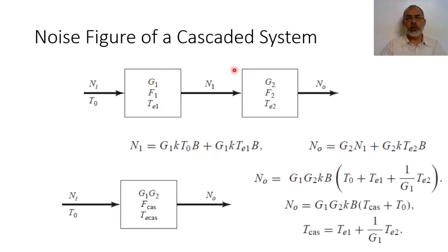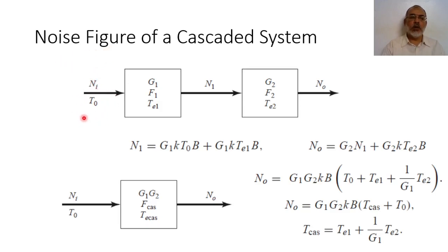We are going to assume that we have two systems. The first system has gain G1, noise figure F1, and equivalent noise temperature TE1. The second system has gain G2, noise figure F2, and equivalent noise temperature TE2. At the input we have the input noise, and the noise figure is defined for room temperature T0, where T0 equals 290 Kelvin.